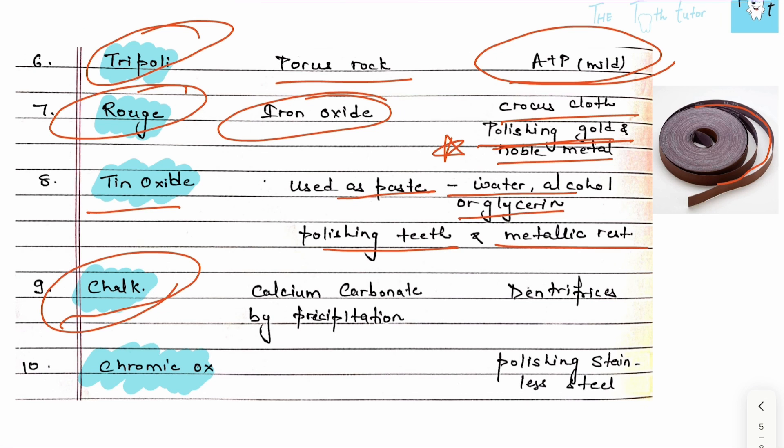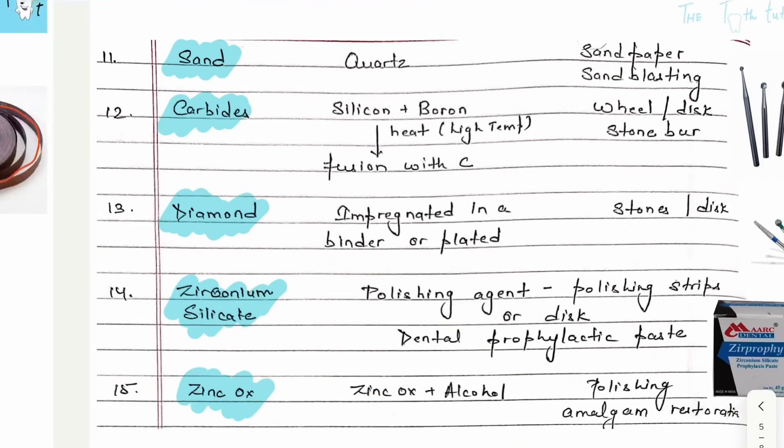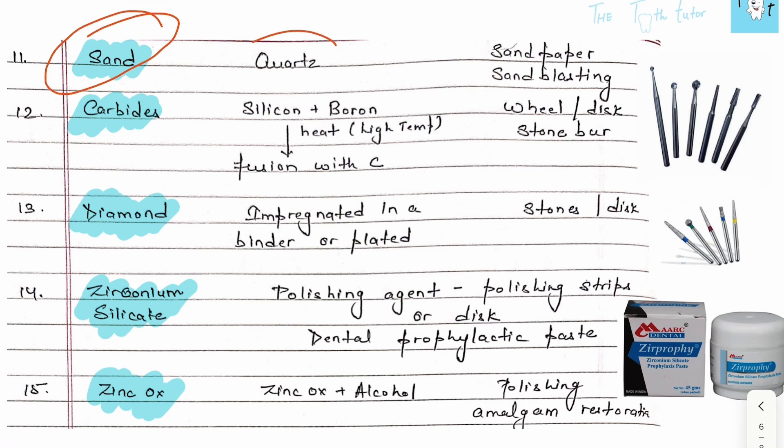We have chalk - calcium carbonate extracted by precipitation, used in toothpaste. Chromic oxide is used for polishing stainless steel. Sand, extracted or derived from quartz, is used in sandpaper and sandblasting.